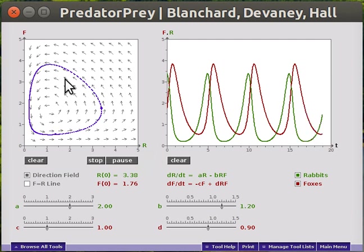This is the xy plane, so this is a parametric set of equations. Here you can see that the red curve is the fox curve and the green curve is the rabbit curve.